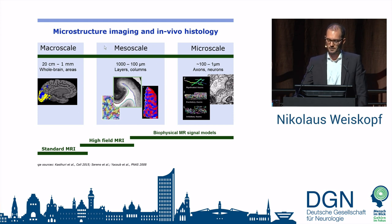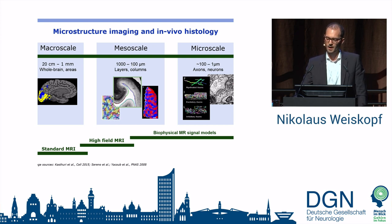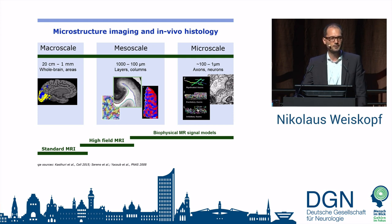With the latest hardware technology, like ultra-high field MRI, we can even push down into the range of mesoscopic structures — layers, columns, stripes in the cortex — which range from about 100 micrometres to 500 micrometres or a millimetre. But if we really want to go into the microstructure and microscale, looking at detailed sub-structures like axons, we talk about structures in the one-micrometre range.